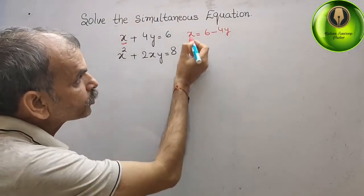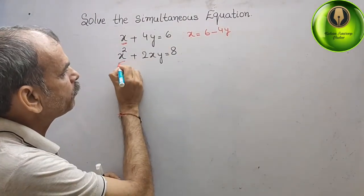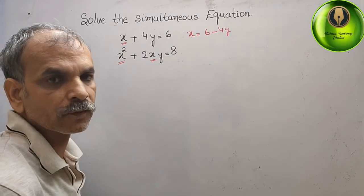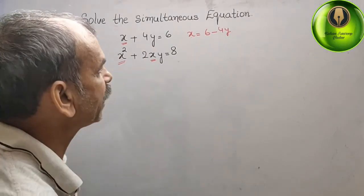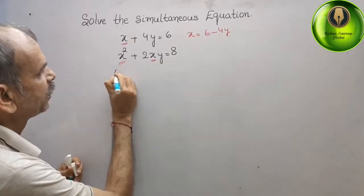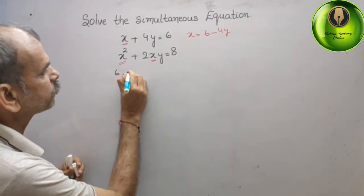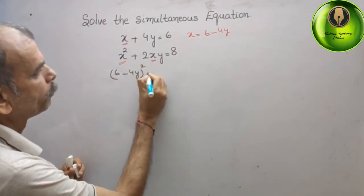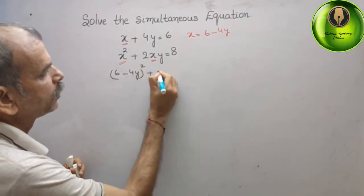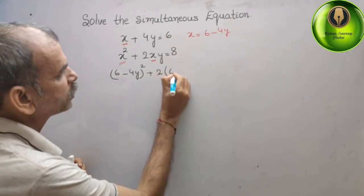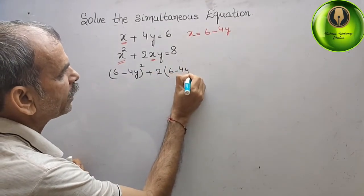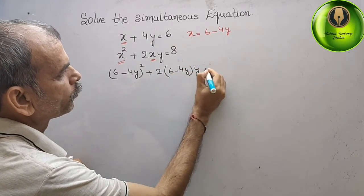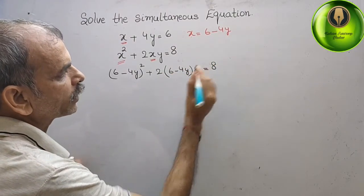Now substitute this value in place of x into the second equation. We get (6 - 4y)² + 2(6 - 4y)y = 8.